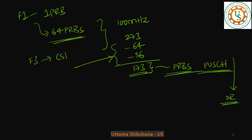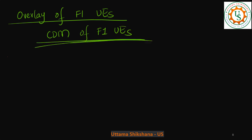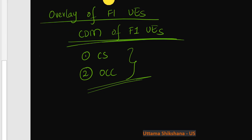Or we can say code division multiplexing of F1 UEs. So we can perform this code division multiplexing with two things: one is cyclic shift, another one is your OCC. Let's see both of these things using the specification.